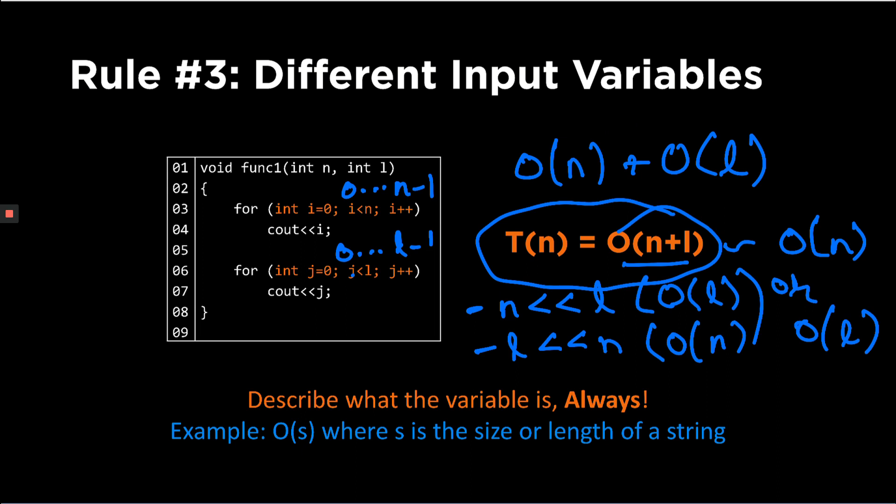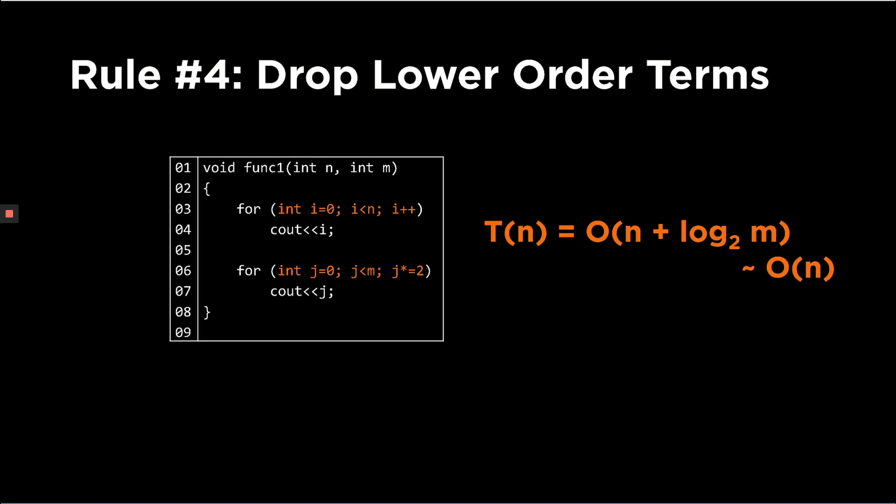You are going to lose a lot of points if you do this incorrectly. Even in projects, a lot of students just say the complexity is O(n) or O(l) without describing what the variable represents. You always have to state that n is something — for example, n is the size of the input, or s is the length of the string. If you just state O(n) without defining it, especially in more complex projects with multiple functions, we won't know what it means.